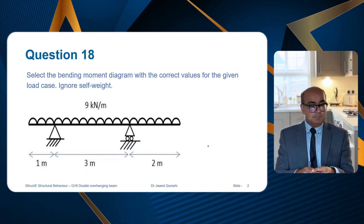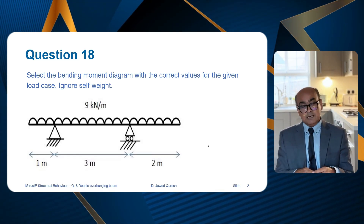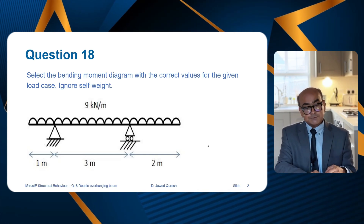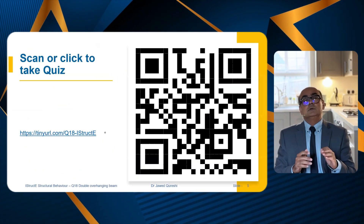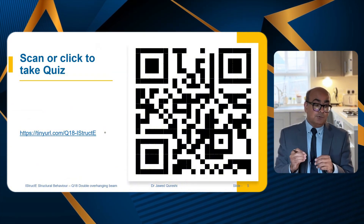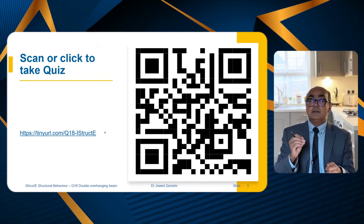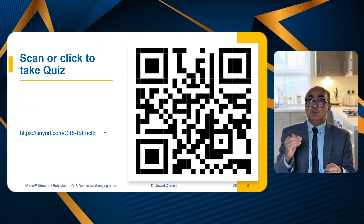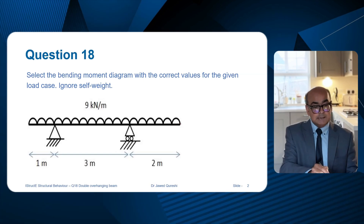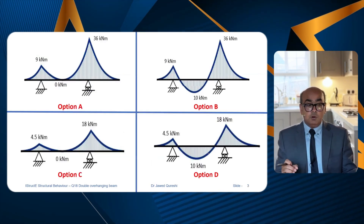This is a double overhanging beam and we have to plot the correct diagram. There are four options for this question. If you want to try this question before I start, go to the URL or scan the barcode to try it first and post your answer in the comments below. We have to select the bending moment diagram for this beam from the four options.